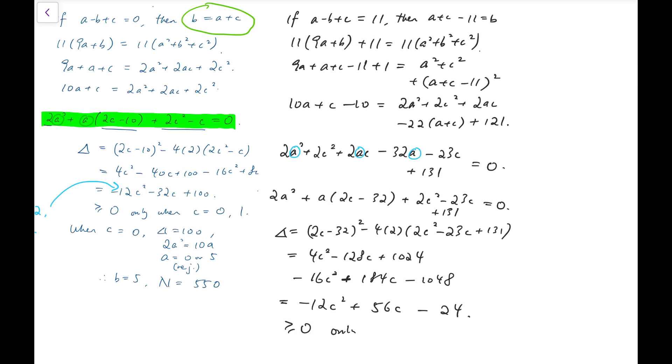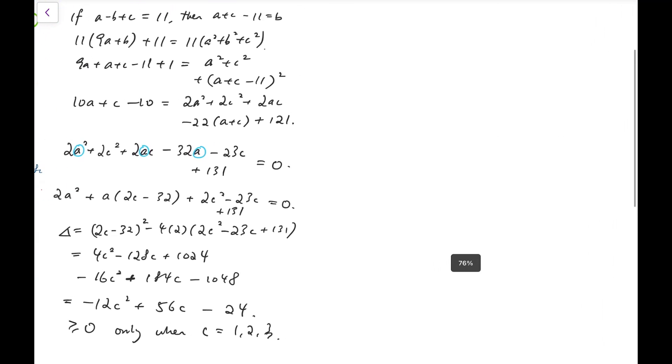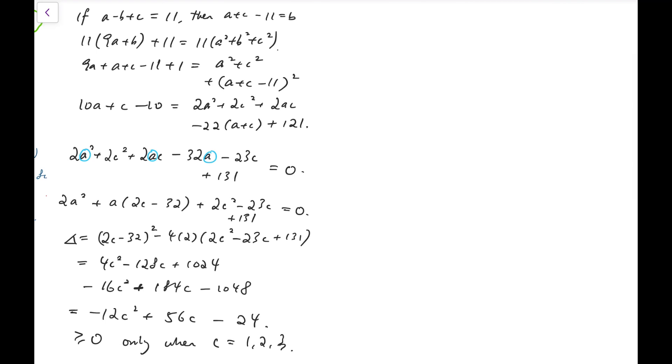Now for this quadratic expression, it will only be non-negative only when c equals 1, 2, and 3. Now if c is 1, then delta is 20, not a perfect square, no integral solution. If c equals 2, delta is 40, and for these two cases we have no integral solution. And finally if c equals 3, delta is actually 36, a perfect square number, so it's possible for a to have positive integral solutions.